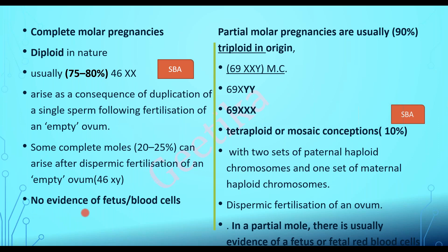In 20 to 25 percent of cases, complete mole can result from dispermic fertilization of an empty ovum — two sperms, 23X and 23Y, fusing with the empty ovum, resulting in a 46XY chromosome. In complete mole there won't be any fetus or blood cells. Whereas in partial mole, which in most cases is triploid, it occurs when two sets of paternal haploid chromosomes fuse with one set of maternal haploid chromosome — two sperms fusing with a single ovum — resulting in a triploid pattern. In 10 percent of cases it can be tetraploid or mosaic.